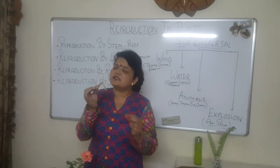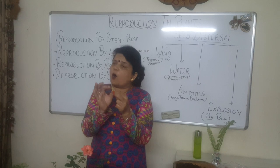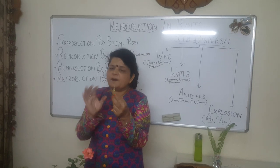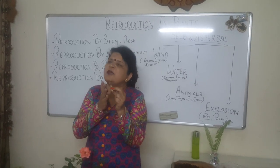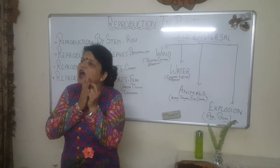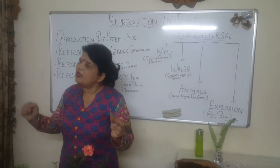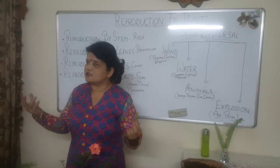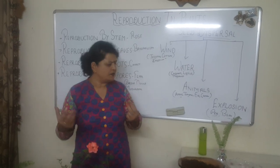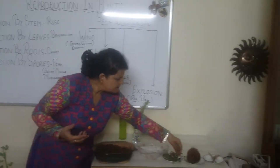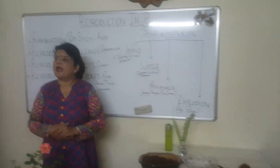Due to drying in the sun, this pod splits up and curls. With great pressure, the seed is thrown away from the pod. The moment it reaches the soil, it starts germinating. This is dispersal by explosion.